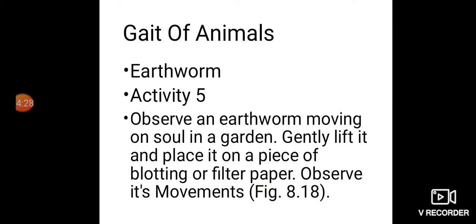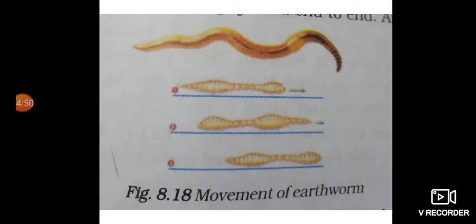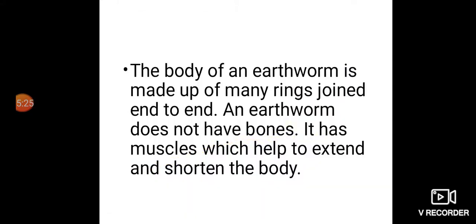Observe an earthworm moving on soil in a garden. Gently lift it and place it on a piece of blotting or filter paper and observe its movement — see figure 8.18. Is its movement different on the paper compared to soil? On which of the two surfaces does the earthworm move more easily? The body of an earthworm is made up of many rings joined end to end.